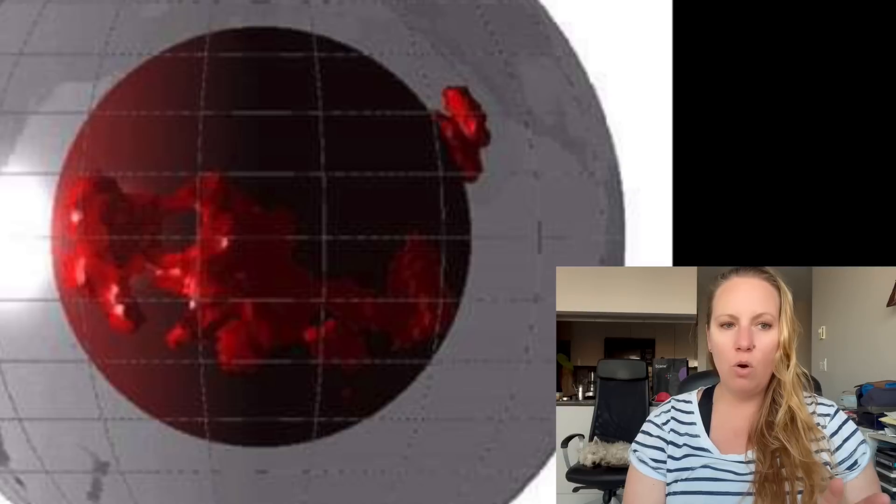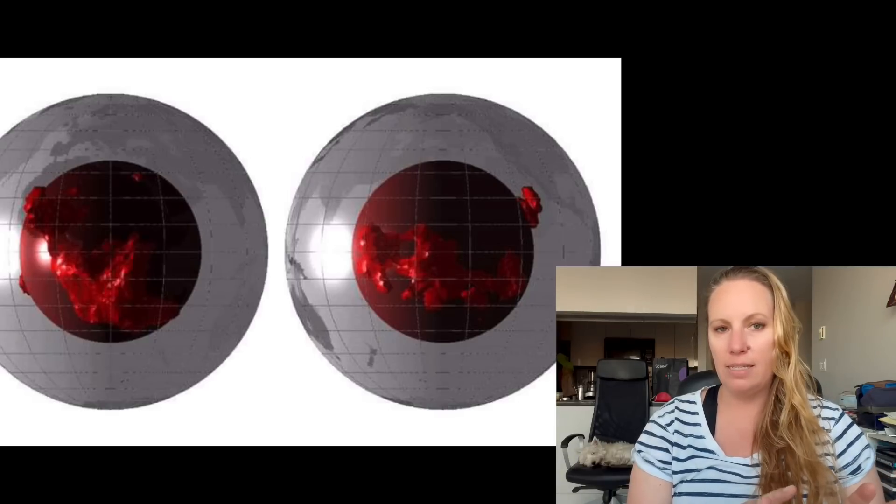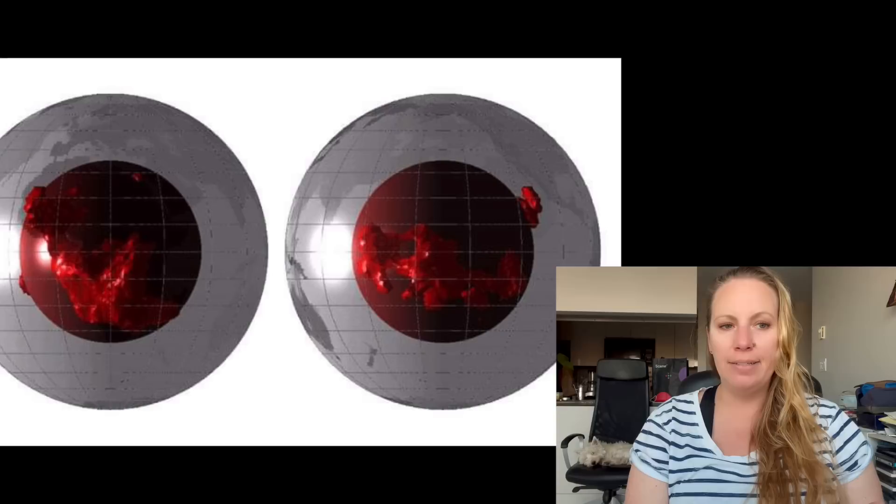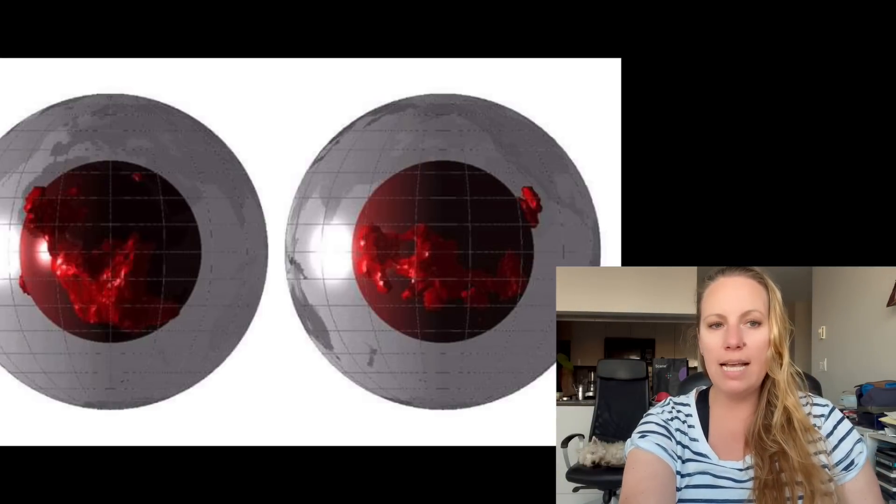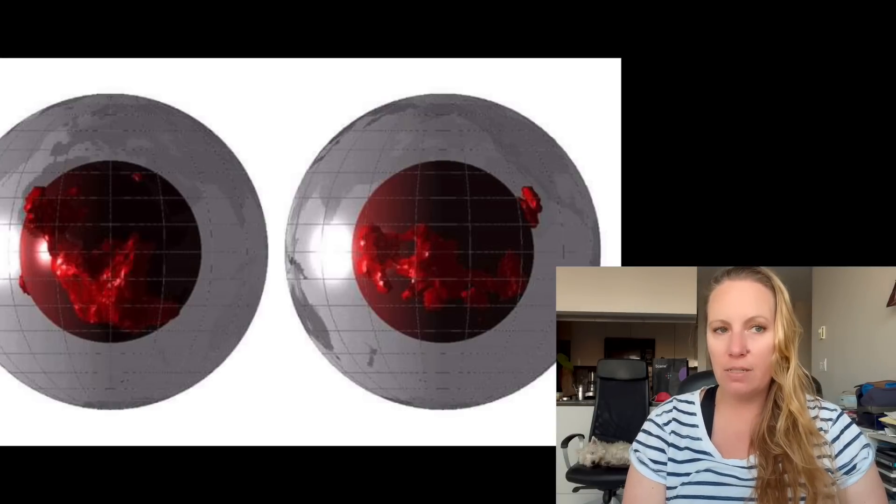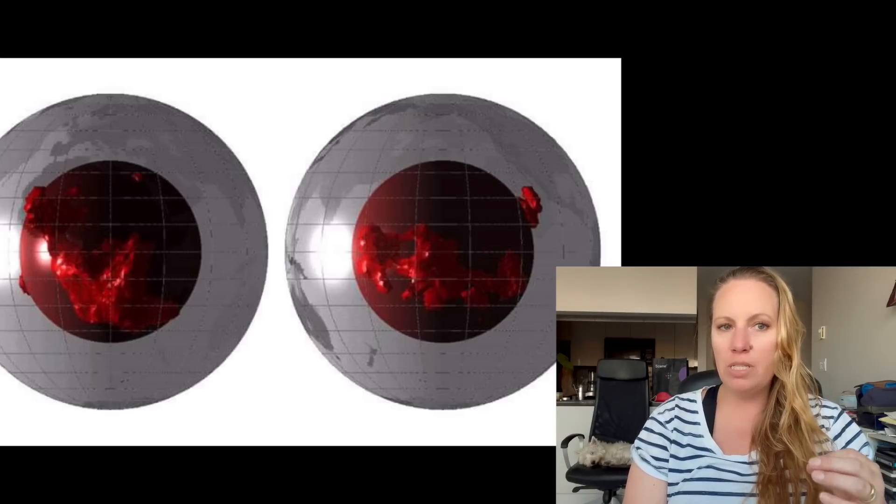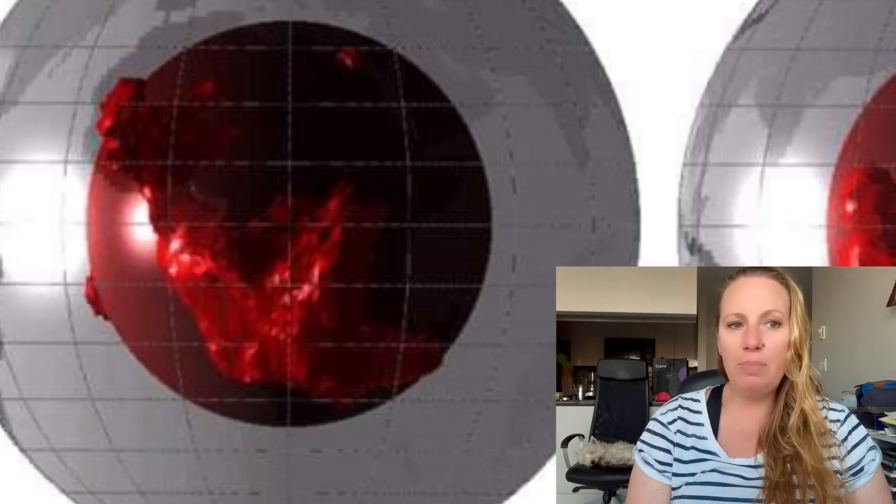It's known as large low velocity provinces or LLVPs. These two formations stand out from the rest of the material around them because the seismic waves travel slower through these regions than anywhere else at the same depth beneath the Earth. So something must be different, and that's how it was detected in the 1980s. In this image here where you see that red core, there's two views of Earth depicting the locations of these two large velocity provinces, basically at the base of the Earth's mantle. One is deep under the continent of Africa, and the other one is spanning the South Pacific Ocean.